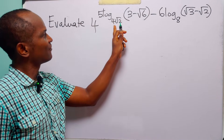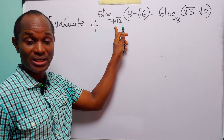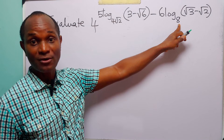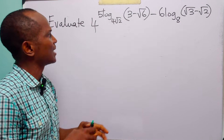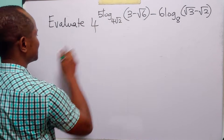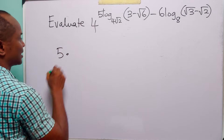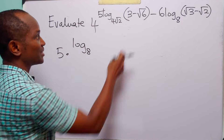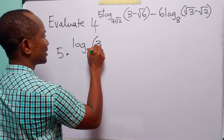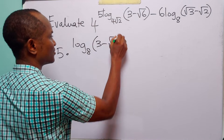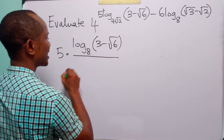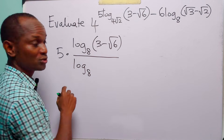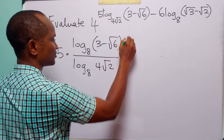To do this, the first thing we are going to do is to change the base of this logarithm from 4 root 2 to 8, to match this second term. When we apply the change of base formula to this, we have 5 times log to base 8 of 3 minus root 6, divided by log to base 8 of the old base, which is 4 root 2.